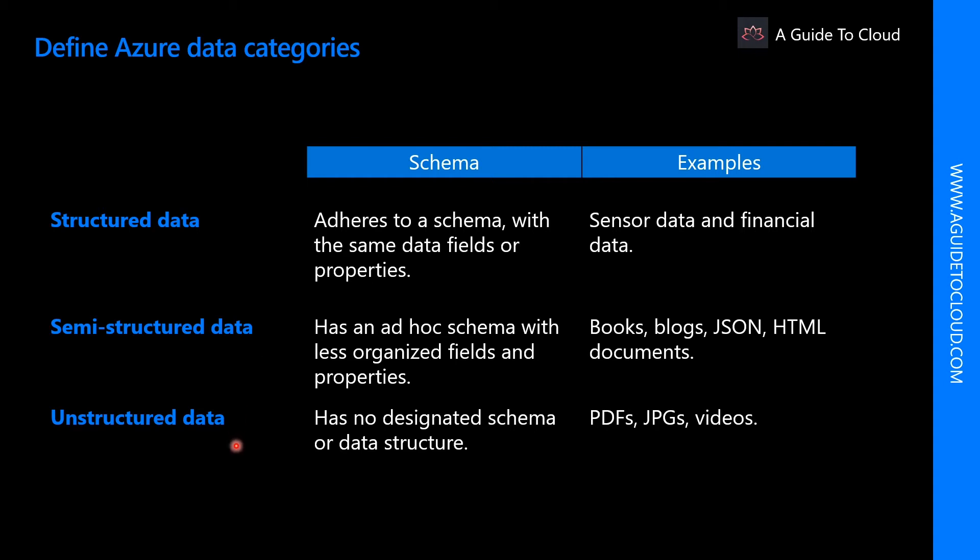And finally, unstructured data. Unstructured data has no defined structure and can hold any kind of data. Unstructured data is becoming more prominent as businesses try to tap into new data sources. Examples of unstructured data include PDF documents, JPEG images, JSON files, and video content.